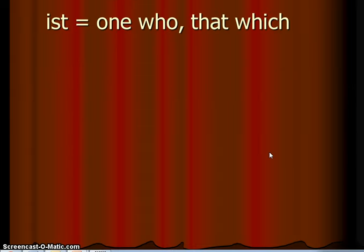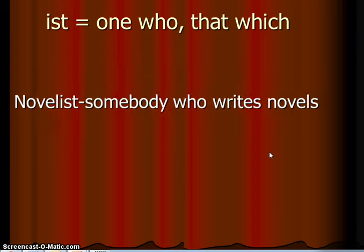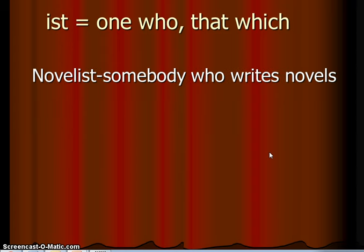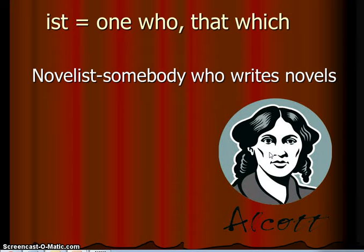Moving on, the next suffix is '-ist,' meaning one who or that which. For example, novelist — somebody who writes novels, one who writes novels. There's a novelist right there: Louisa May Alcott. You may know her book Little Women, which she wrote way, way back long ago. Other '-ist' words: dentist — one who works on teeth. And if you take a keyboarding class, you might become an expert typist — one who types well.